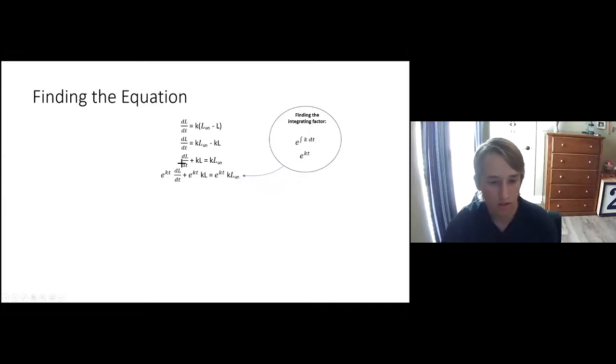What you essentially do is if you have this equation set up literally just like that, you say e to the integral of whatever that thing is right there, like the k's, and then you say dt because the dt is right there. So we integrate k dt and you're left with e to the kt, and what you do with that is distribute that to everything on both sides of the equation.